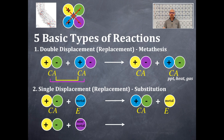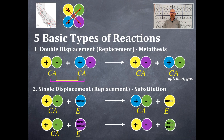Here's the second pattern: you have a cation and an anion, and now the element is a non-metal. The non-metal is going to displace the anion. You always end up getting a California and an element. That's number two — single displacement, single replacement, or a substitution type of reaction.